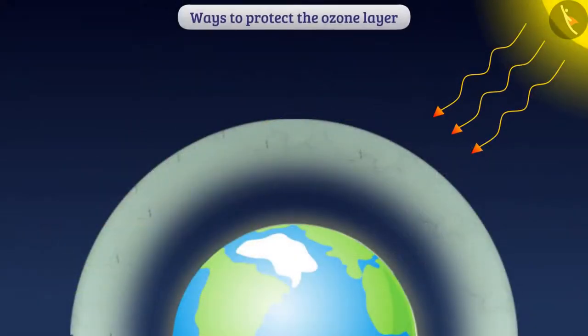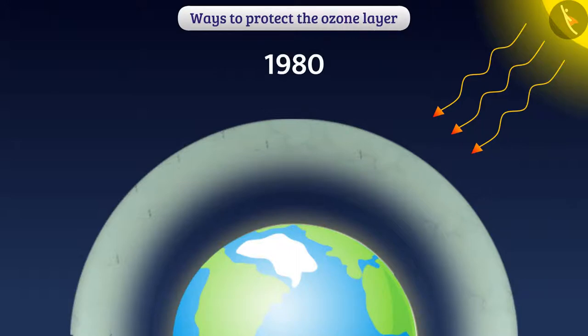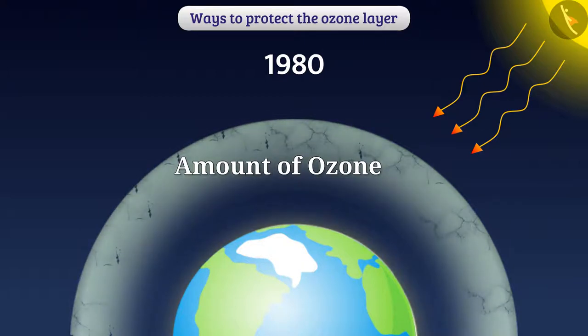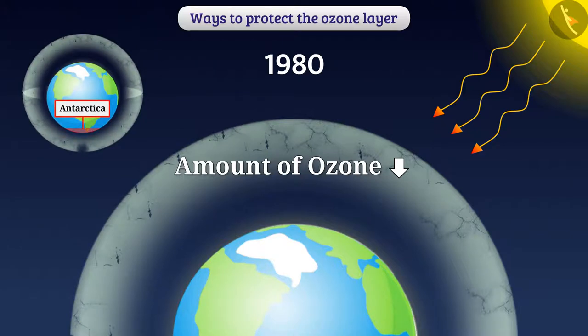Let us know some ways to protect the ozone layer. Since 1980, the amount of ozone in the atmosphere has started declining sharply. Scientists have discovered a hole in the ozone layer present above Antarctica. Governments of many countries are working to protect the ozone layer.